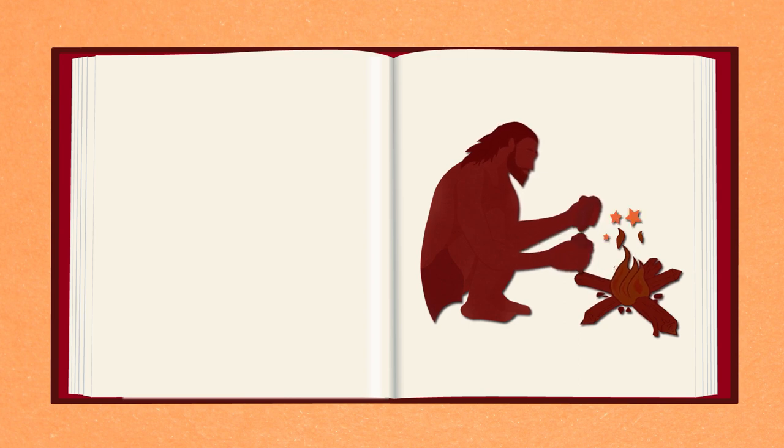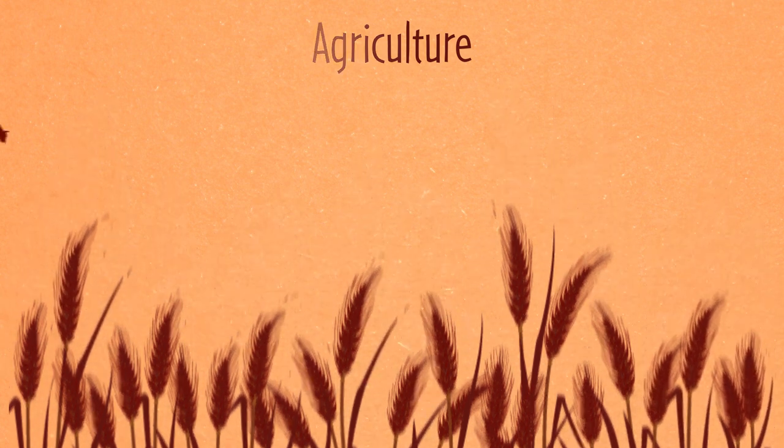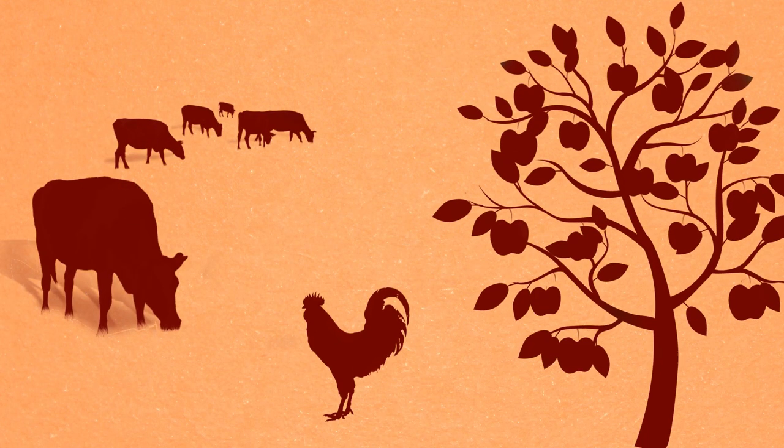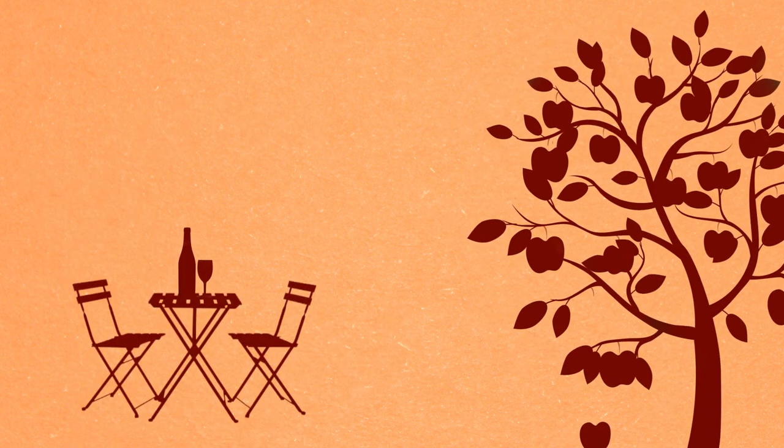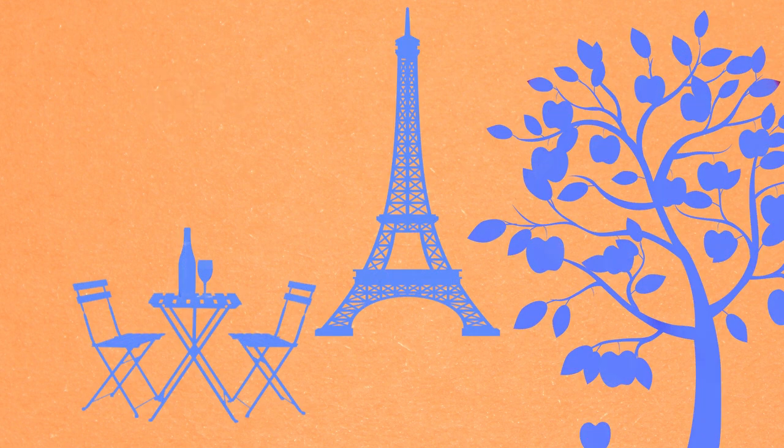Then, about 10,000 years ago, something unusual happened. Some forgotten genius invented agriculture and saved our species from living like wild animals. We went from animal desperation into abundance, leisure, sophistication and culture. Despite ups and downs, things have been getting better ever since.